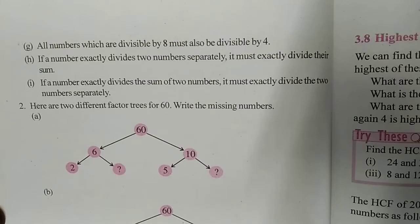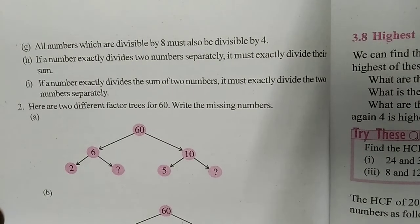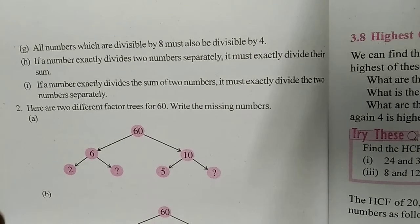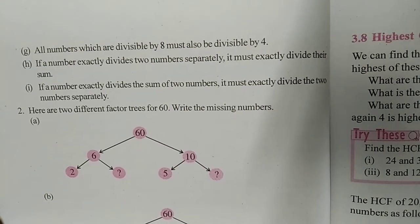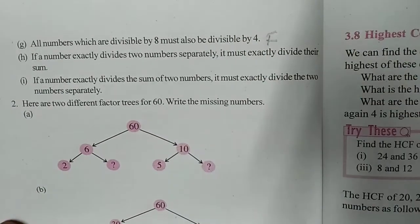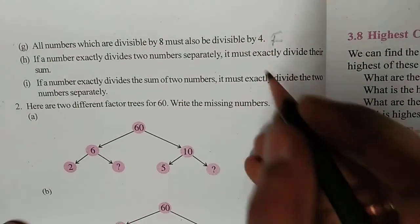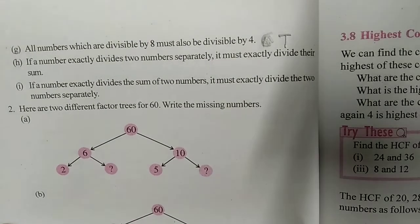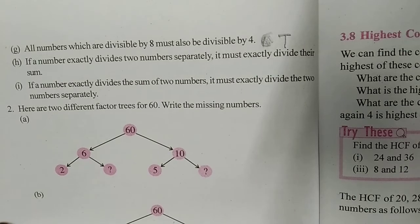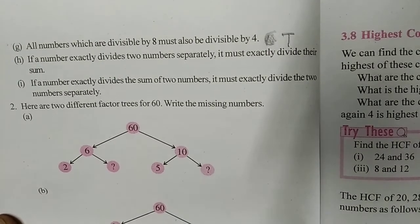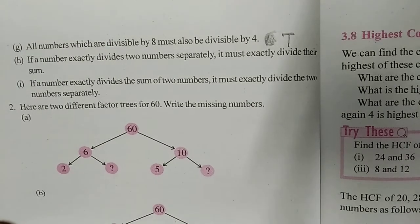Question 1(g): All numbers which are divisible by 8 must also be divisible by 4. Students, any number divisible by 8 will also be divisible by 4. For example: 16 is divisible by 8 and also divisible by 4; 24 is divisible by 8 and also divisible by 4; 32 is divisible by 8 and also divisible by 4. So this statement is true. Write 'true' here.